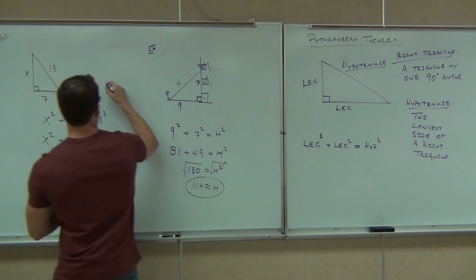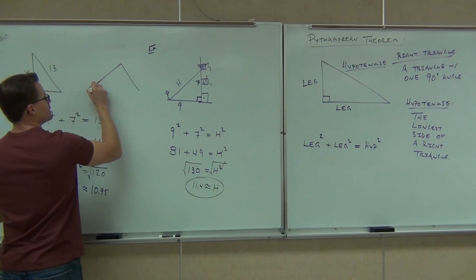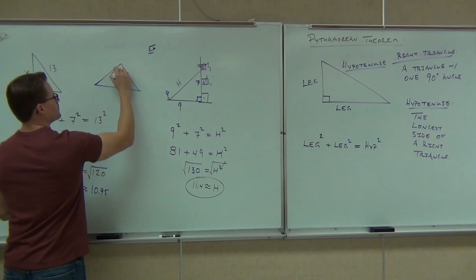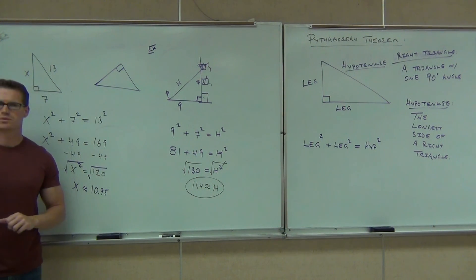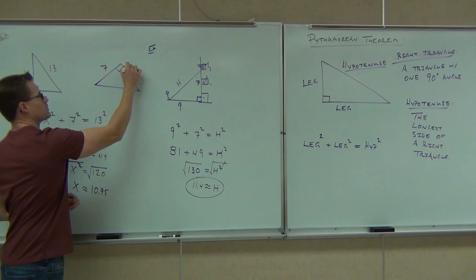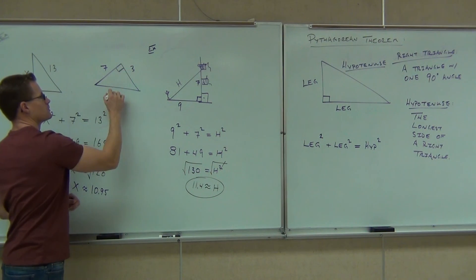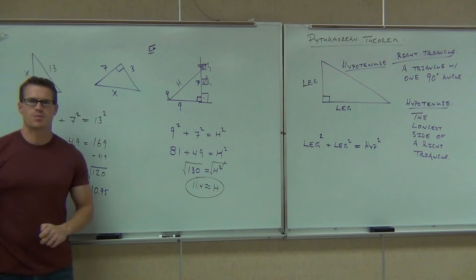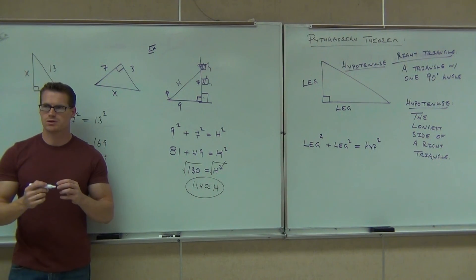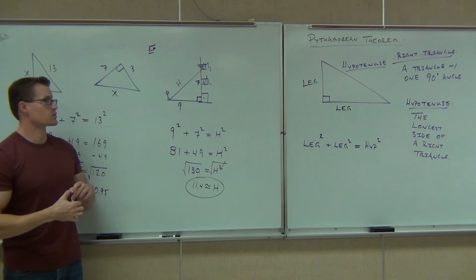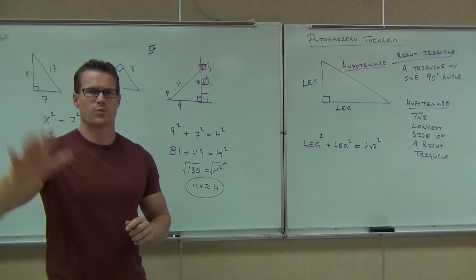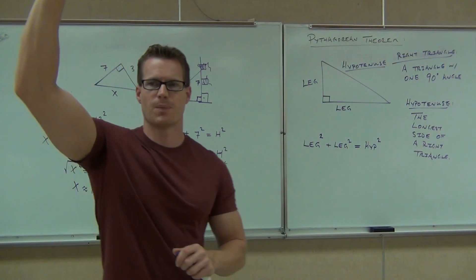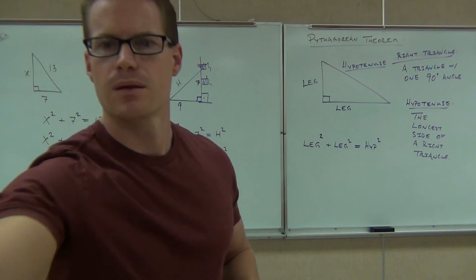One last thing: if I give you a problem with sides 7, 3, and X, can you identify the legs and the hypotenuse? The hypotenuse is X — the legs are 7 and 3. How many people feel pretty good about what we talked about? Good.